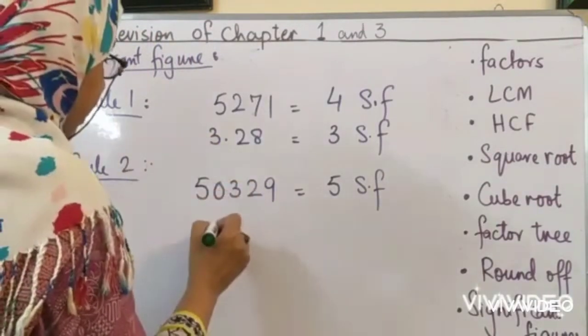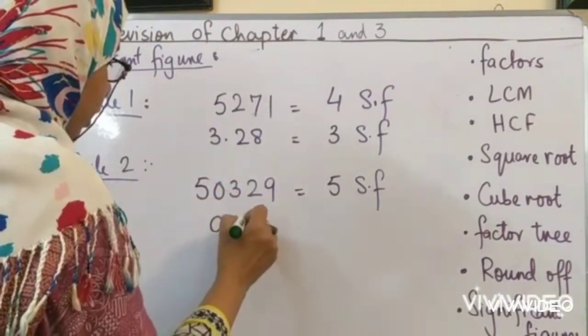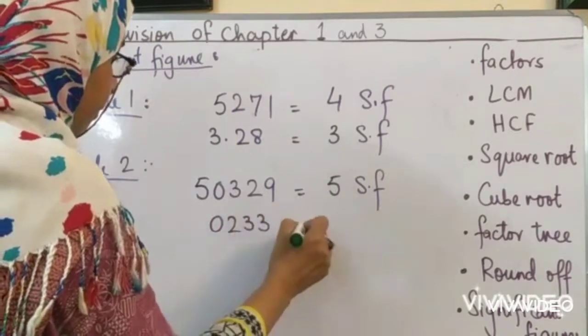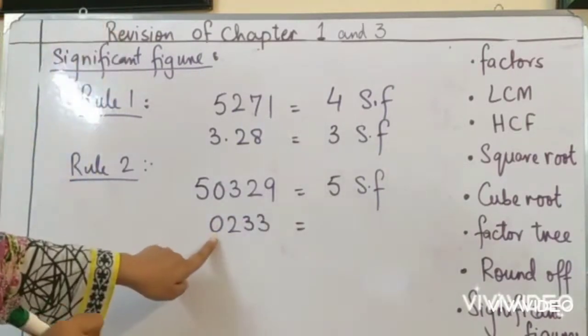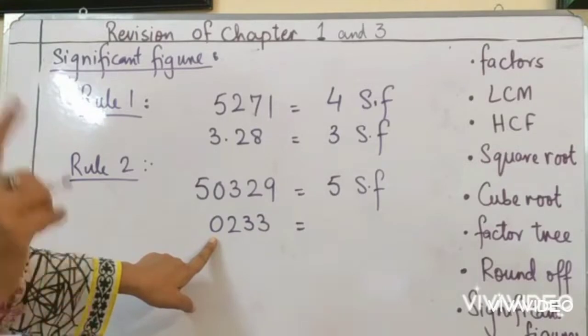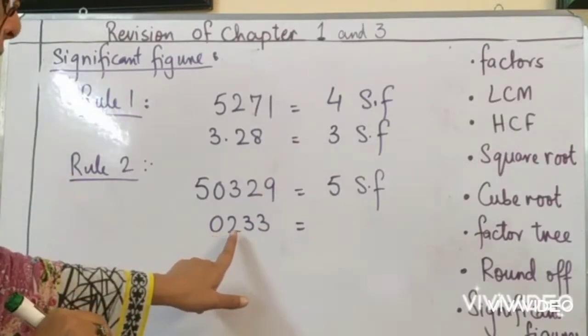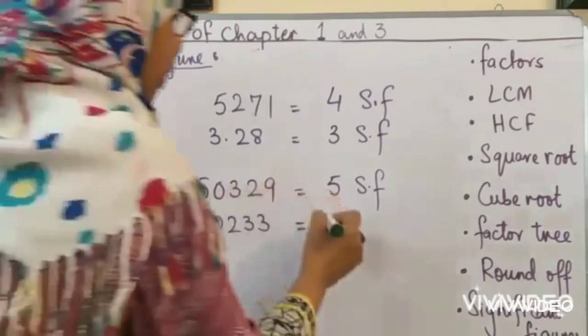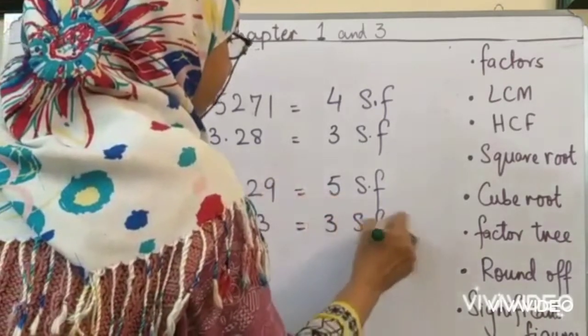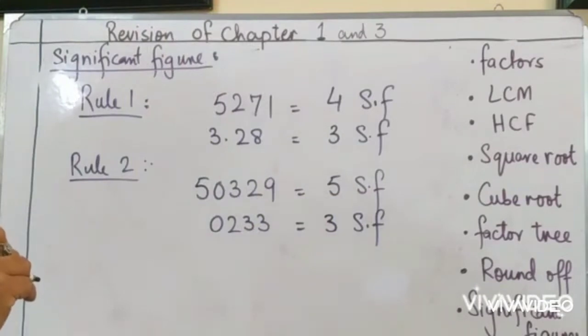If I have a number 0, 2, 3, 3. Now this zero is not between two non-zero digits. So I will ignore this and count the rest. 1, 2, 3. Three significant figures. Clear?